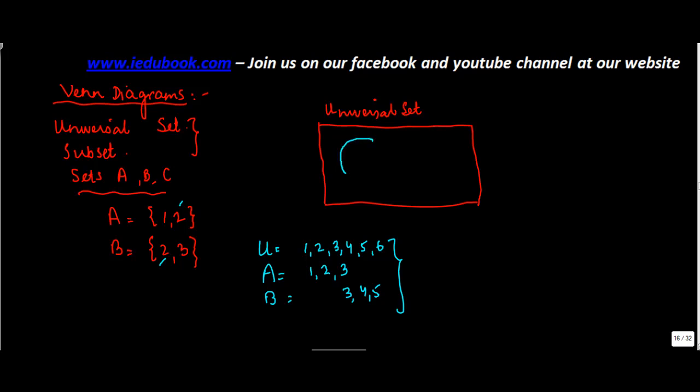Okay, now if you have to represent it in this universal set, how do you do it? So you will first of all make a circle, let's name it as A. Then you have B. So basically, within the universal set, you have two subsets, A and B. Now is there something common between these two? Yes, three is common between both of them. So therefore, some part of B has to coincide with A, because there is something common.